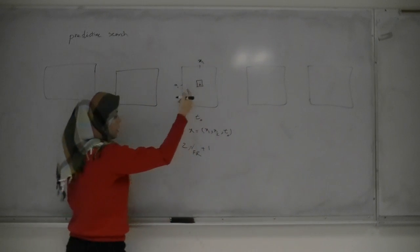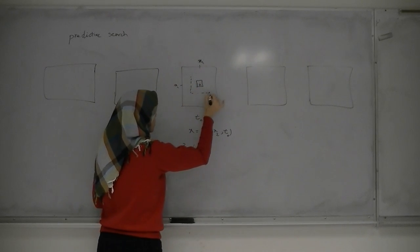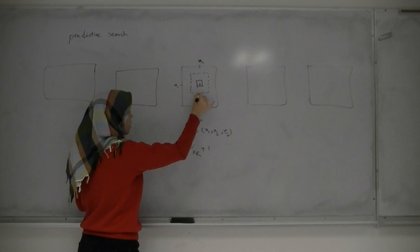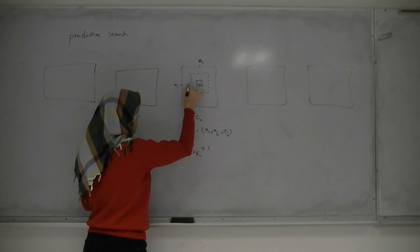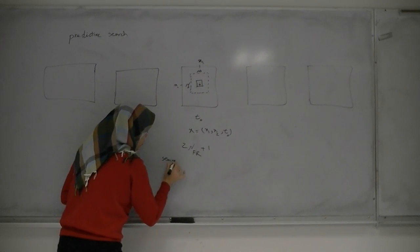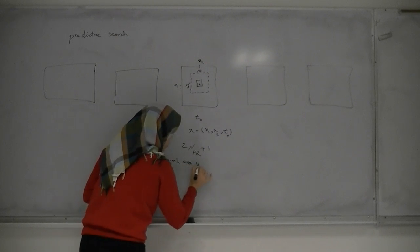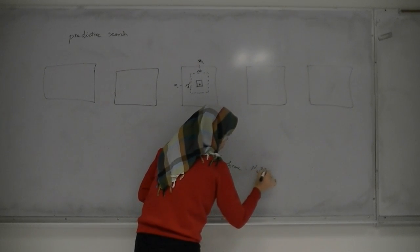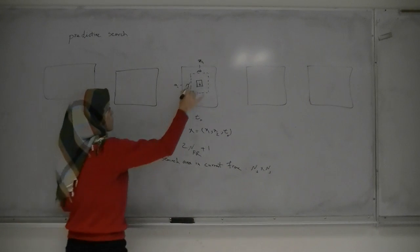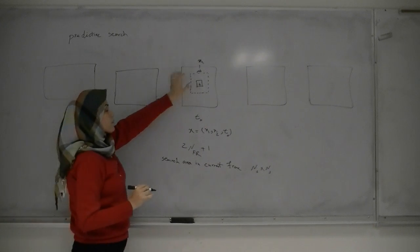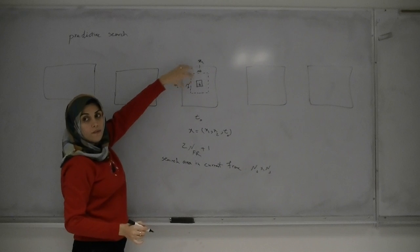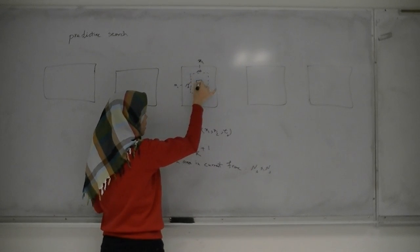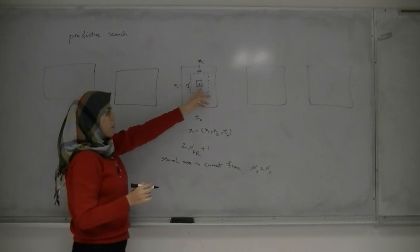First of all, we define a search area around the current frame. We call it the index. For the search area, we use exhaustive search. It means that we find all of the blocks and find the most similar blocks to this reference block.